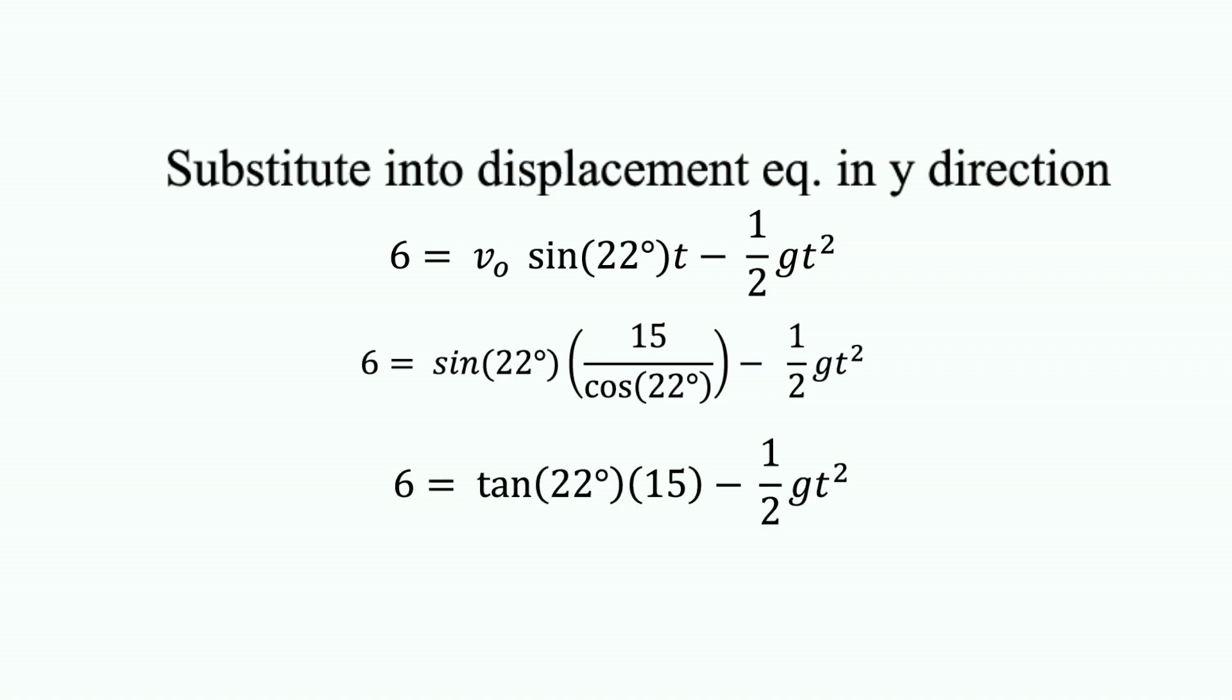Simplifying gives me 6 equals tangent 22 times 15 minus 1-half gt squared. Now it's a simple matter to do the algebra and solve for t.